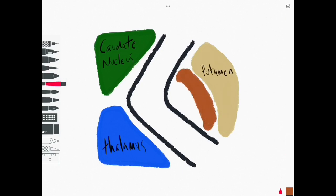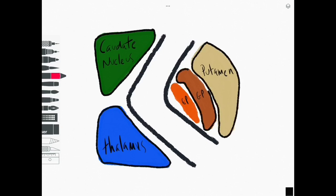These are the chordate nucleus or the head of the chordate nucleus here, the putamen and two components called the globus pallidus, an internal and external segment.